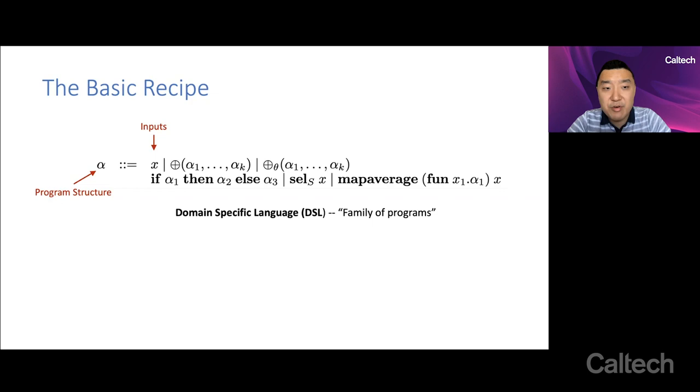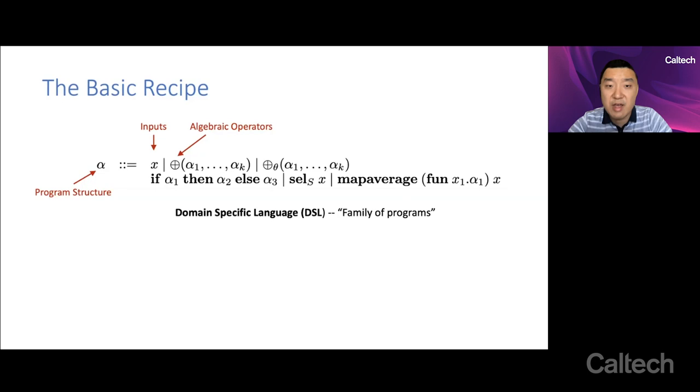You have the raw input. So alpha could just return the input. You have algebraic operators in this specific language, although it's not strictly speaking necessary, like plus, minus, various other algebraic operators. That's all included in this notation.